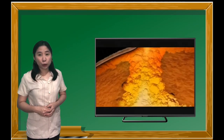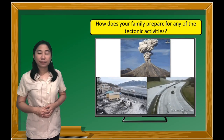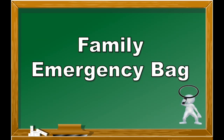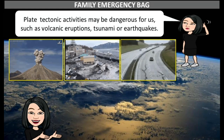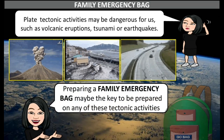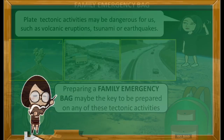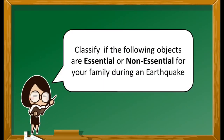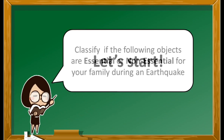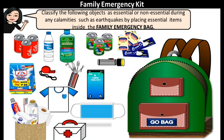You have learned that tectonic activities such as earthquakes and volcanic eruptions can't be stopped. But how does your family prepare for any of these tectonic activities? Family emergency bag. Plate tectonic activities may be dangerous for us, such as volcanic eruptions, tsunami, or earthquakes. Preparing a family emergency bag may be the key to being prepared for any of these tectonic activities. Get a piece of paper and a pen. Classify if the following objects are essential or non-essential for your family during an earthquake. Label them essential or non-essential.